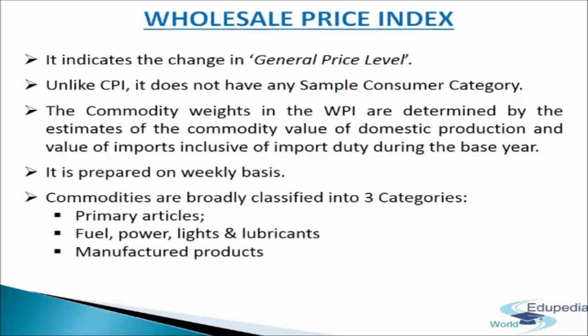Next, Energy Articles: in this category goods like Power, Coal, Petroleum Products, Electricity and Fuel are included. The number of goods in this category is 19 and the weightage is 14.23%.